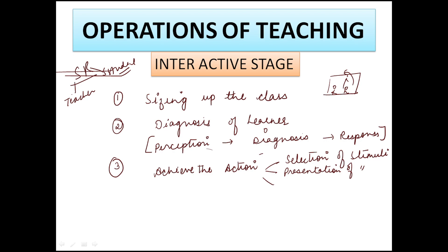Third is feedback plus reinforcement. Teaching should not always be just a lecture method — there should be proper reinforcement from time to time, as well as feedback taken by the teacher in the teaching-learning process, so we can judge what desirable response we are getting from students. Positive reinforcement includes rewarding students or giving clapping in class; negative reinforcement includes mild punishment. Feedback and reinforcement are very important so that we can achieve our action stage.